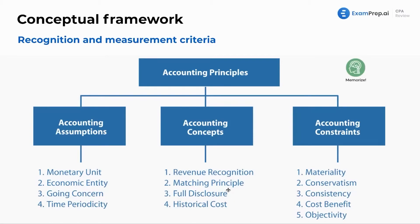The full disclosure principle is that you need to report everything — obviously with the constraints — but you need to not withhold any information. As the company, you need to fully disclose and give all information to the investors and creditors. Historical cost means we value things at historical cost unless they're at fair value. There's a whole valuation chapter for that. This conceptual framework chapter is a nice intro to everything we'll see later on.